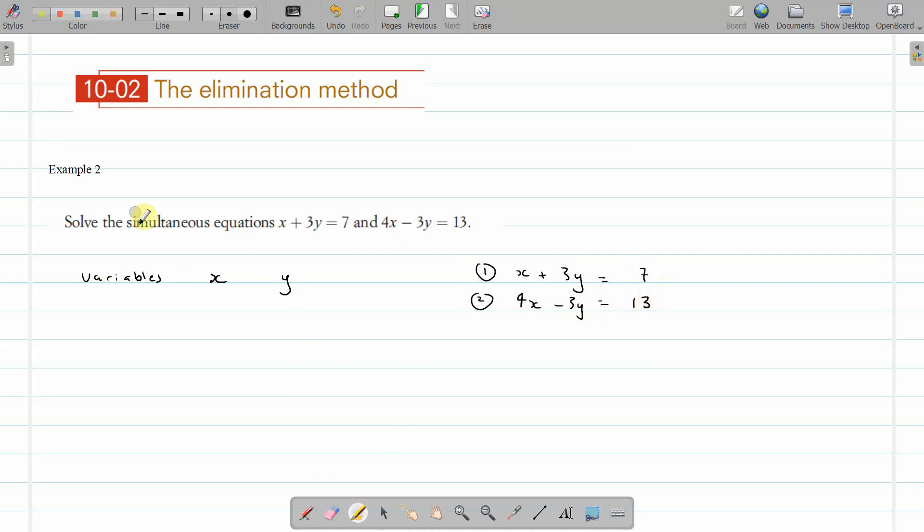So our variables are there. Coefficients, well that one there is 1, 4, plus 3, minus 3. That's 1 there, I'll just leave that, that's 1.